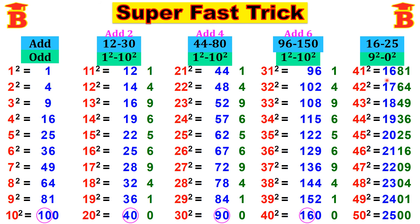Therefore: 41 squared is 1681, 42 squared is 1764, 43 squared is 1849, 44 squared is 1936, 45 squared is 2025, 46 squared is 2116, 47 squared is 2209, 48 squared is 2304, 49 squared is 2401, and 50 squared is 2500.